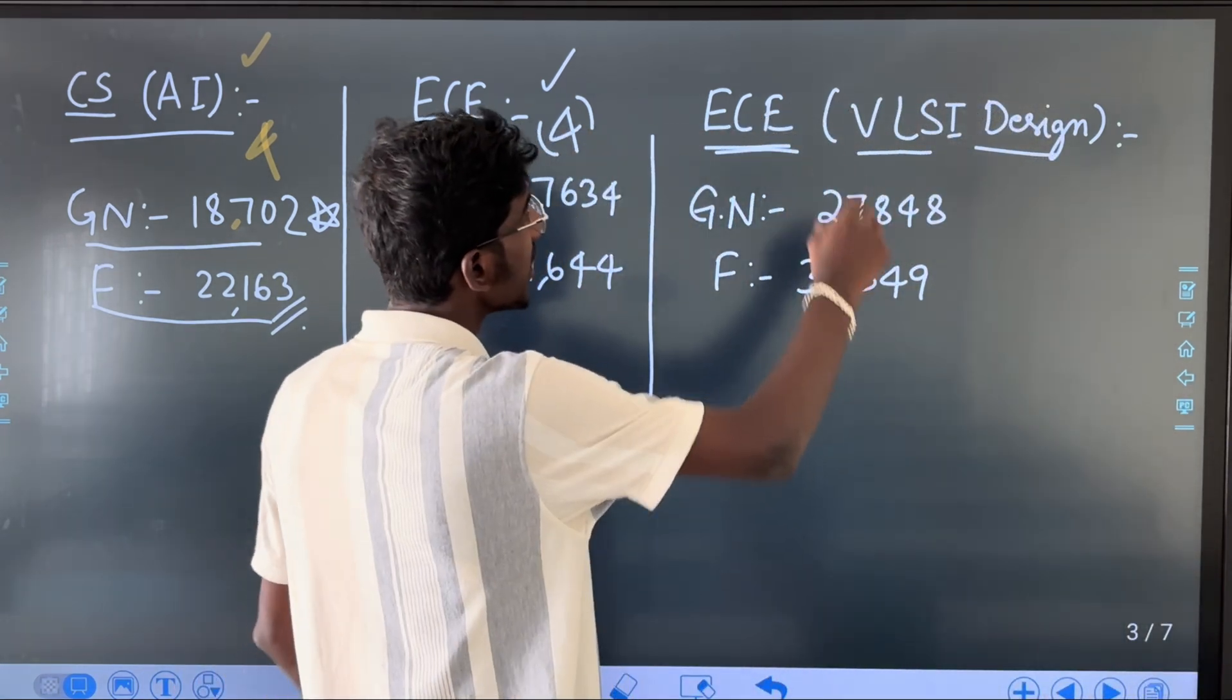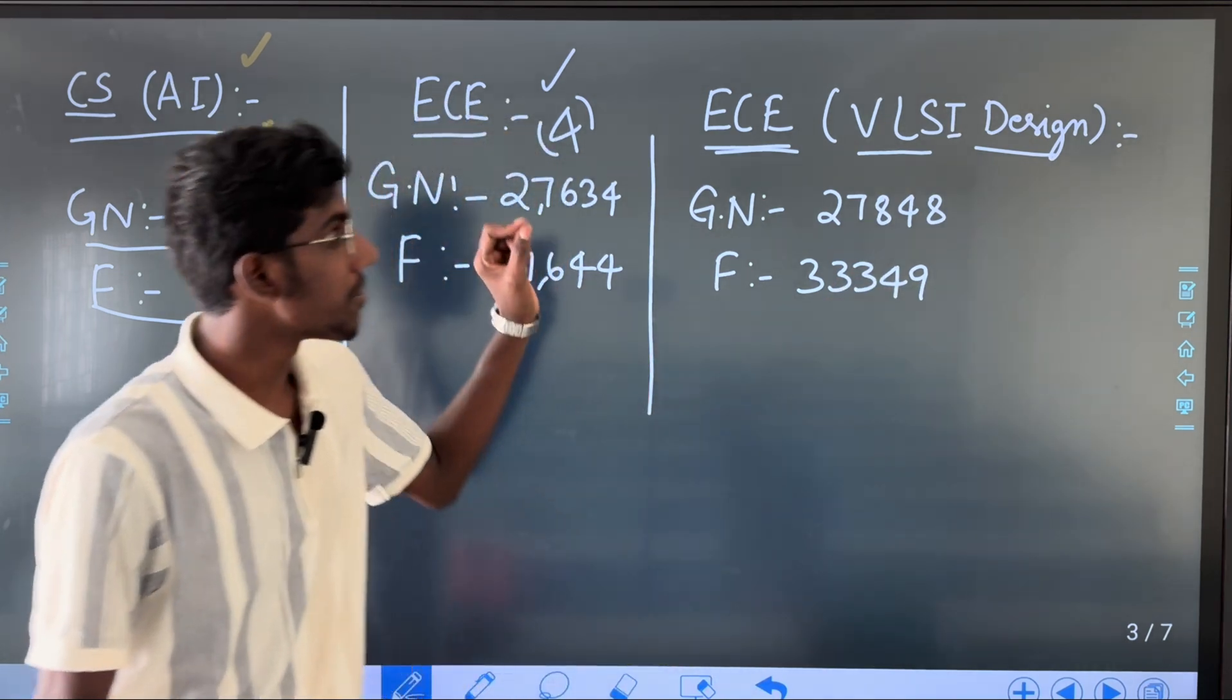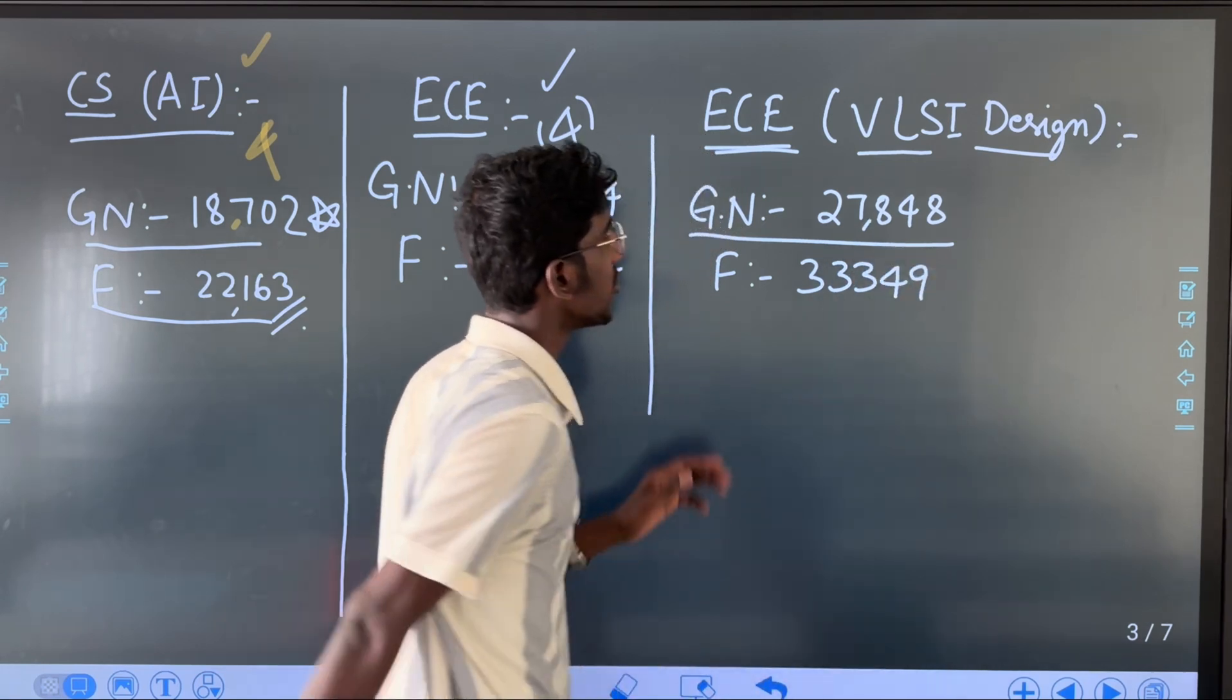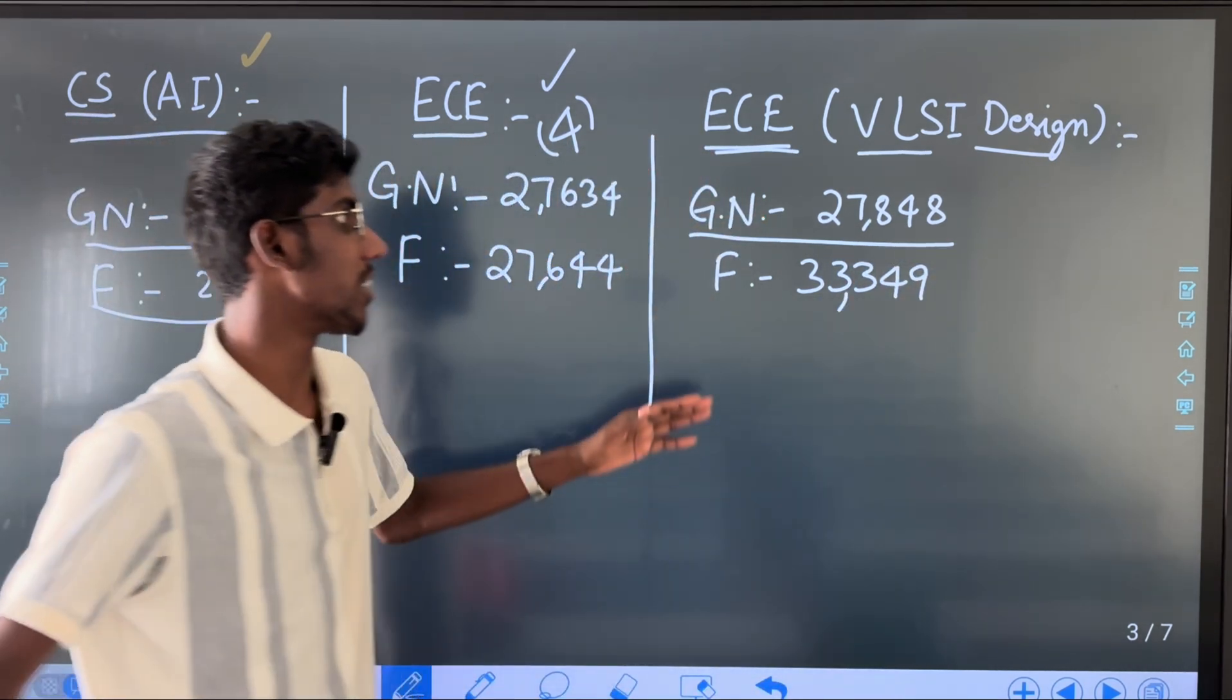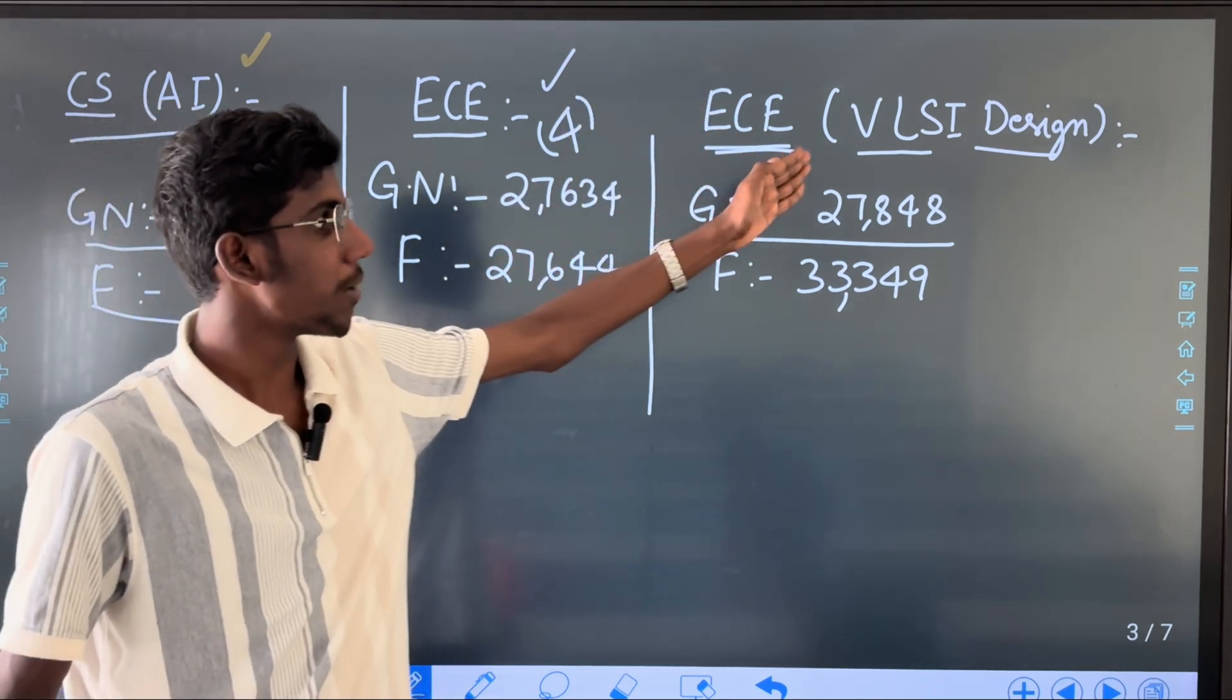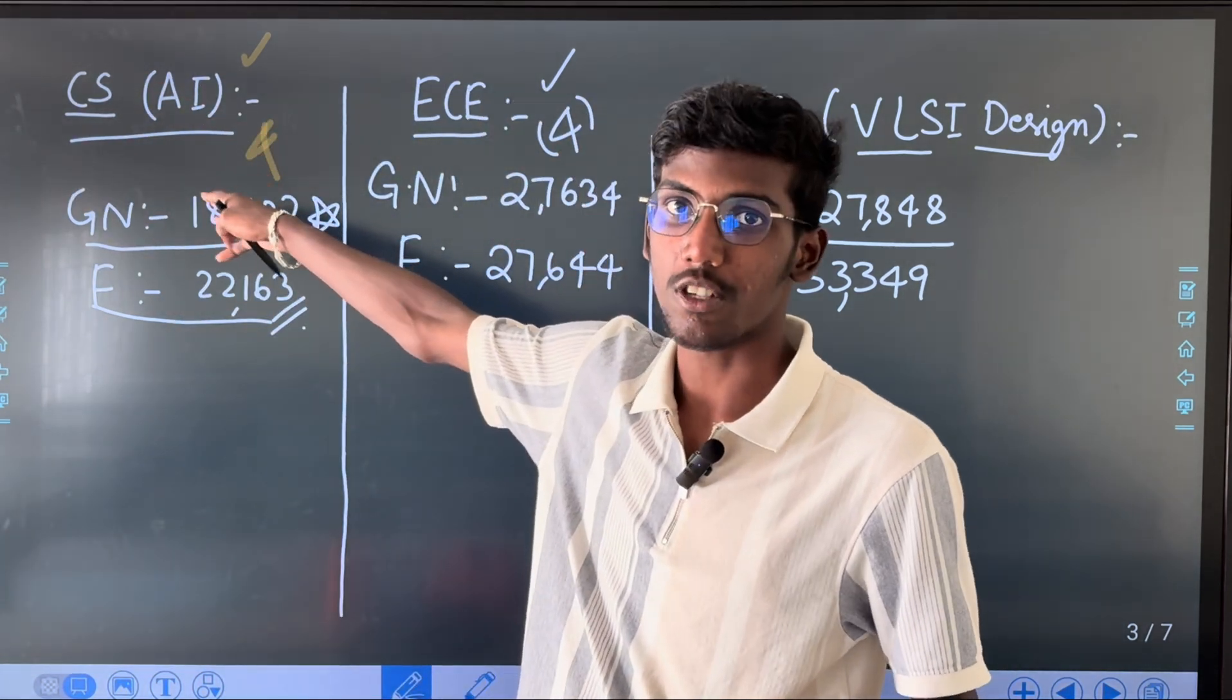ECE VLSI Design, 5 years Integrated M.Tech course. You do VLSI design. General Neutral Category 27,848, Female 33,349. ECE VLSI Design - that is B.Tech ECE and M.Tech VLSI Design. This is major with AI. This is 4 years course.